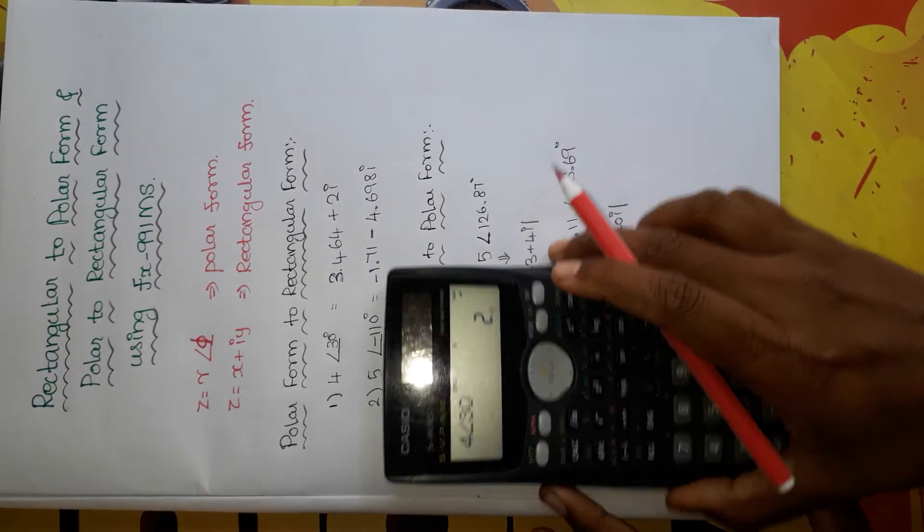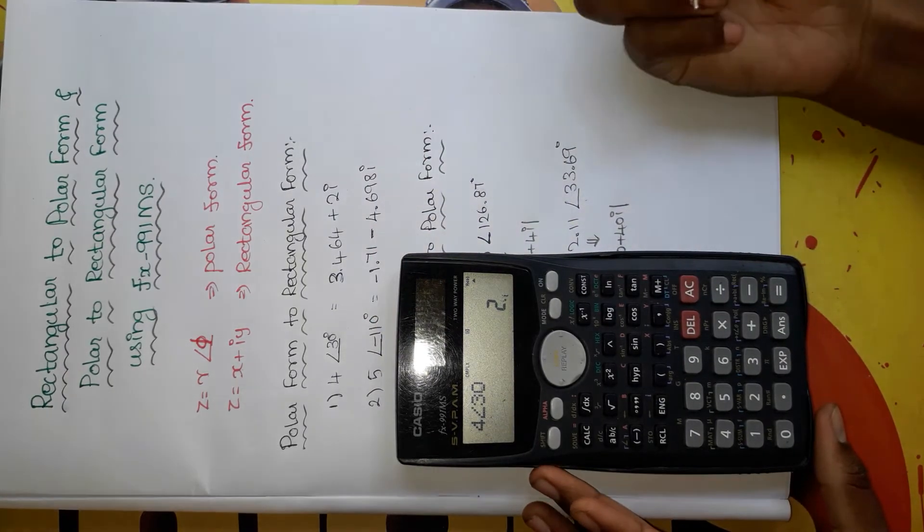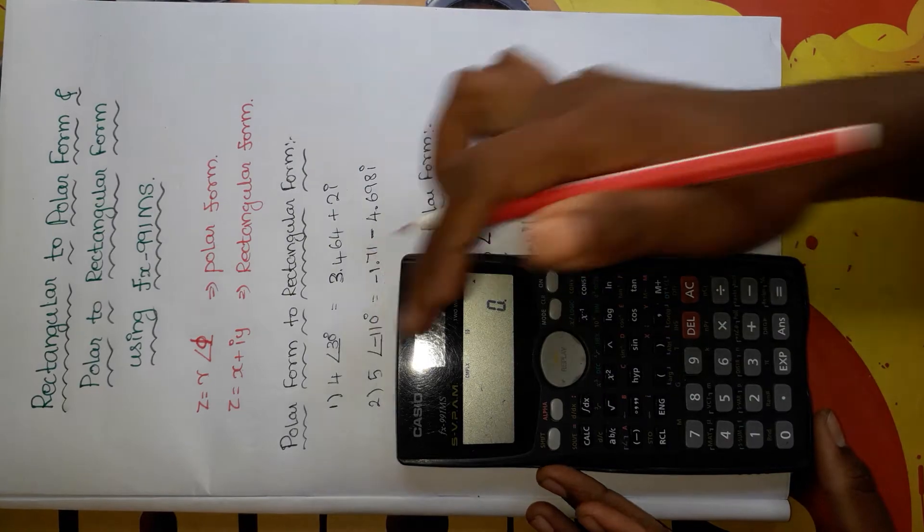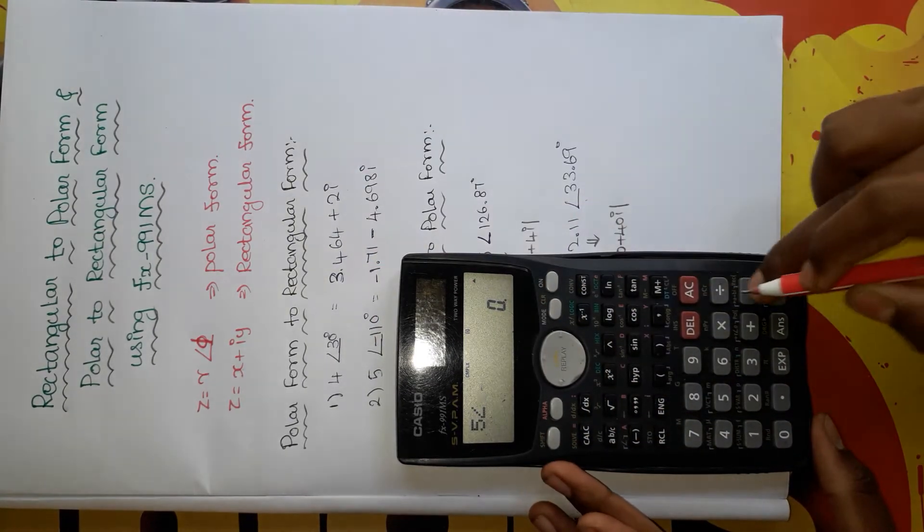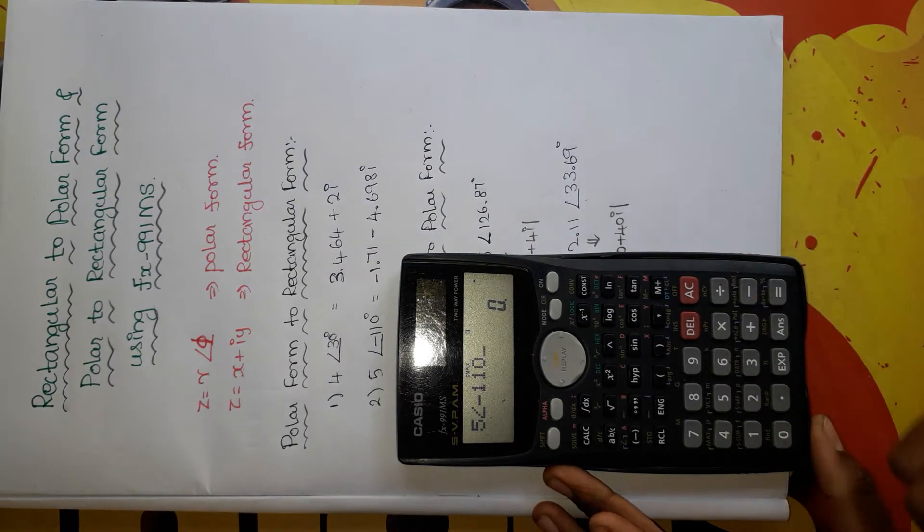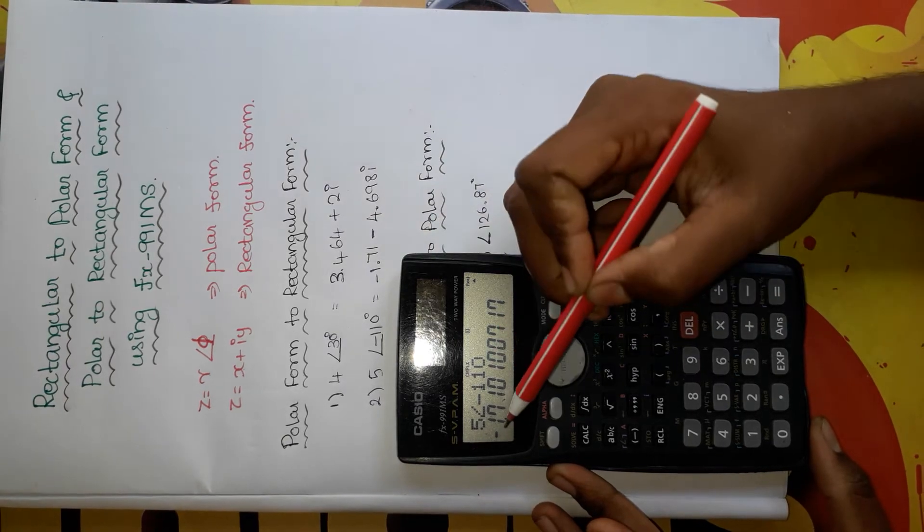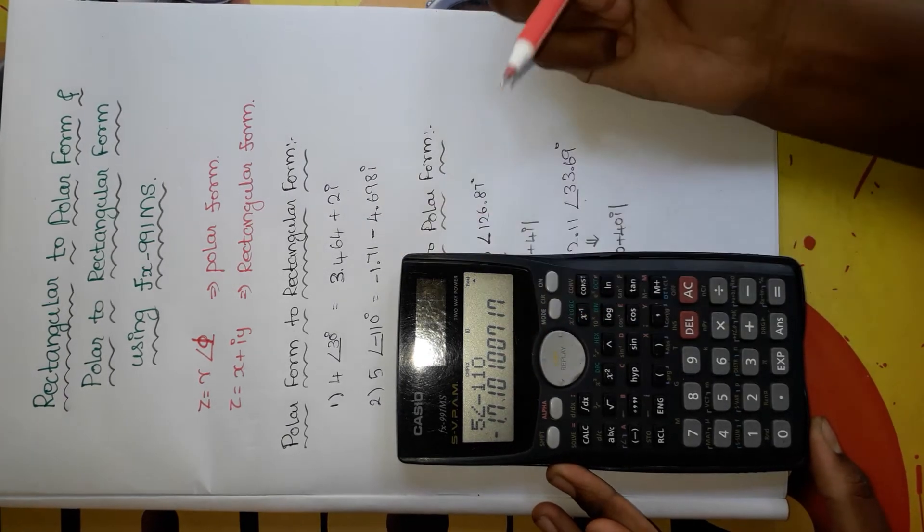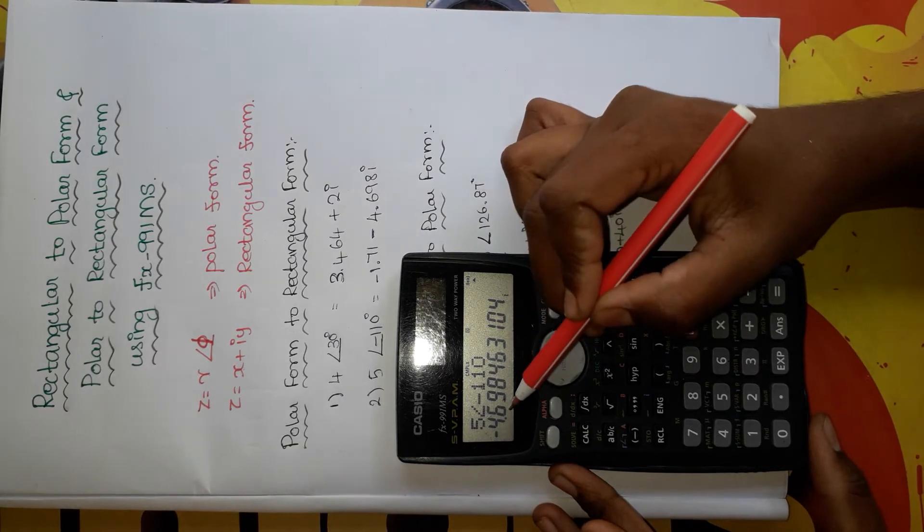Let's take another problem: 5 angle minus 110 degrees. So press 5 and then angle, shift and then this symbol, minus 110. Now press equal to, so you will get the real part of the number, minus 1.71. Then press shift and then equal to, you will get the imaginary part, minus 4.698.